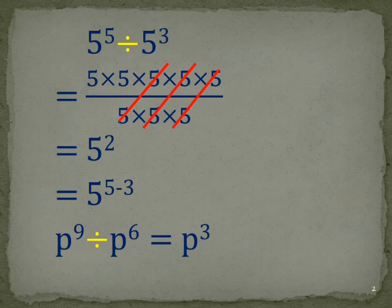So in our case, if we've got p to the power of 9 divided by p to the power of 6, 9 take 6, we're going to be left with p to the power of 3.